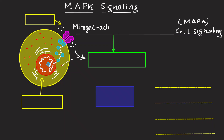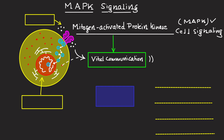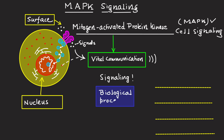The Mitogen-Activated Protein Kinase Signaling Pathway, in short, also known as the MAP Kinase Signaling Pathway, serves as a fundamental and vital communication system within cells. When cells need to communicate with their surroundings, they use the MAP Kinase Signaling Pathway. This pathway transmits signals from the cell surface to the nucleus, the center of the cell.